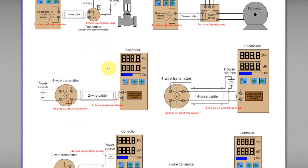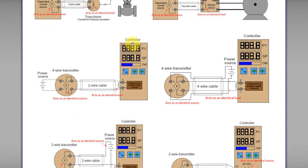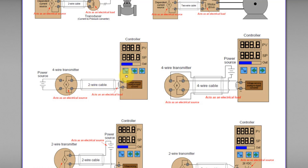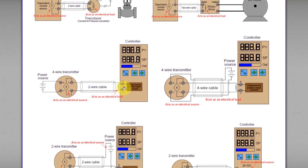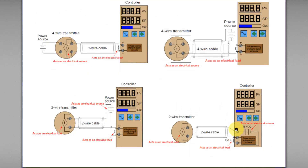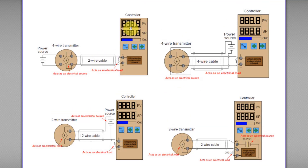How about this circuit? Now, the controller does not provide any power source to power the whole loop. Instead, the controller acts as an electrical load. How do we know? It's very simple. You can see there is a positive and negative terminal here, instead of a positive V terminal. If you see the positive V terminal with a wire connected to it, it means this controller will provide the power source, because the positive V — positive voltage — is internally connected to its internal power source. So this controller acts as an electrical load.